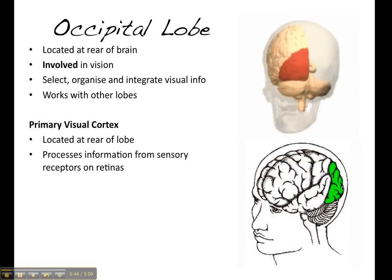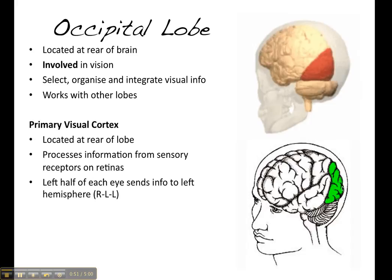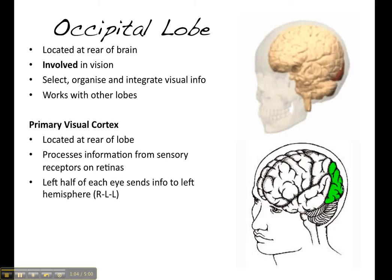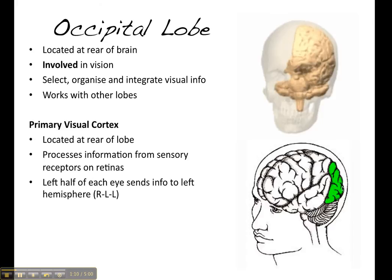Now, unlike the rest of the brain and the body, the left eye does not transmit information to the right hemisphere. Rather, the left half of each eye sends information to the left hemisphere, and the right side of each eye transmits information to the right side of each hemisphere.